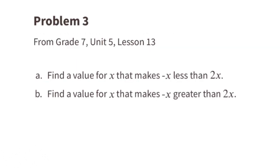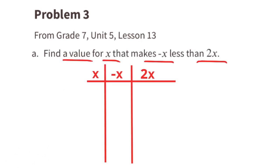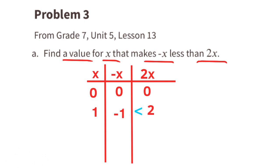Problem number three from 7th grade unit 5 lesson 13. Part a: find a value for x that makes negative x less than 2x. Let's start with 0 — when x is 0, negative x is 0 and 2x is 0. Let's plug in 1: when x is 1, negative x is negative 1 and 2x is 2. Negative 1 is less than 2, so when x is 1, negative x is less than 2x.